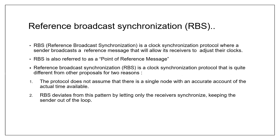So what is this algorithm? It is a protocol where a sender broadcasts a reference message that will allow its receivers to adjust their clocks. It is also referred to as a point-to-point reference message. This synchronization protocol is quite different for two reasons: first, it does not assume that there is a single node with an accurate amount of time available; and second, it deviates from the traditional pattern by letting only the receivers synchronize, keeping the sender out of the loop.